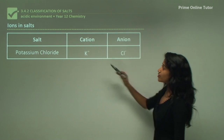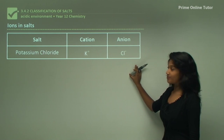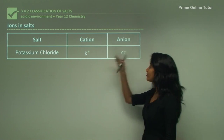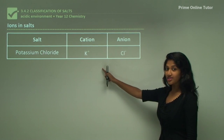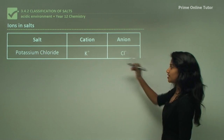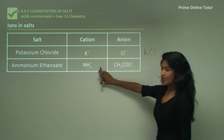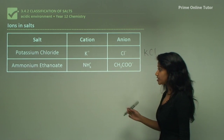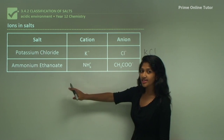Let's look at some salts and their cations and anions. A cation is a positively charged ion, while an anion is a negatively charged ion. Remember: there's a 't' in cation — think of it as a plus sign. For example, potassium chloride is made up of K⁺ and Cl⁻, giving KCl. Ammonium ethanoate consists of the ammonium ion and the ethanoate anion — also known as acetate — and both names are used.